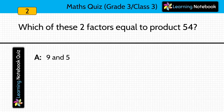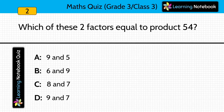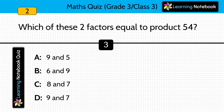Next question: Which of these two factors equal a product of 54? Out of these four options, you have to tell which one of them equals to product 54. Answer is option B: 6 and 9, because 6 into 9 equals to 54.